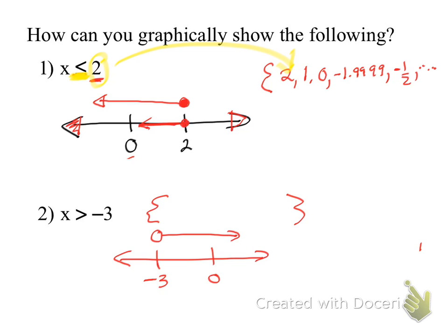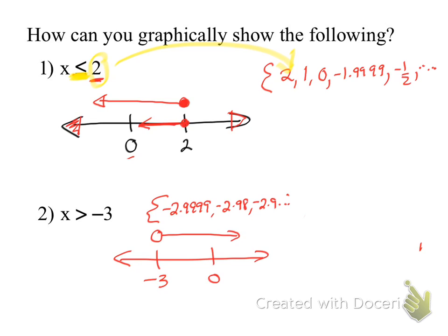There's no bar on the second inequality symbol. So where does my solution set begin? It's greater than negative three, so I could start at negative 2.9999, negative 2.98, and so on. Negative three is not in this solution set — it's not equal to. The bar has to be under the greater than or less than for it to be a solid circle.